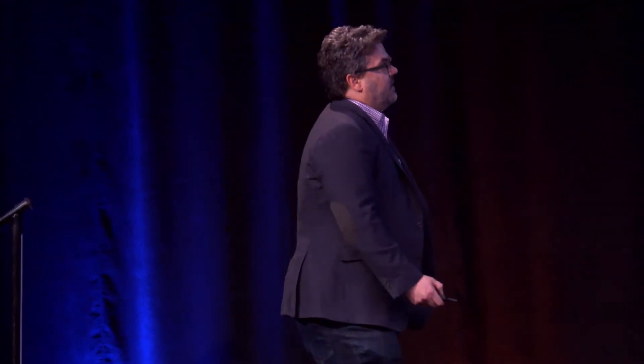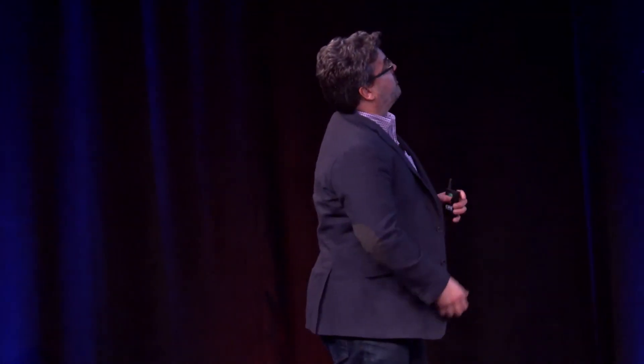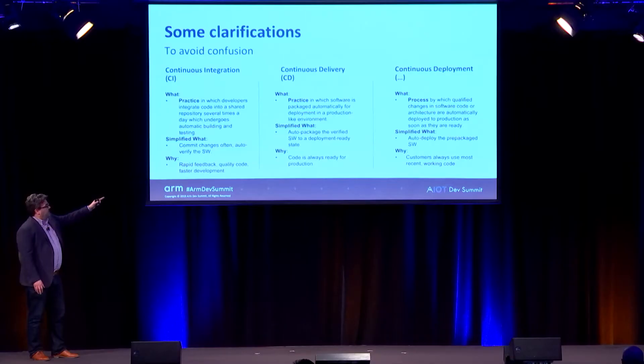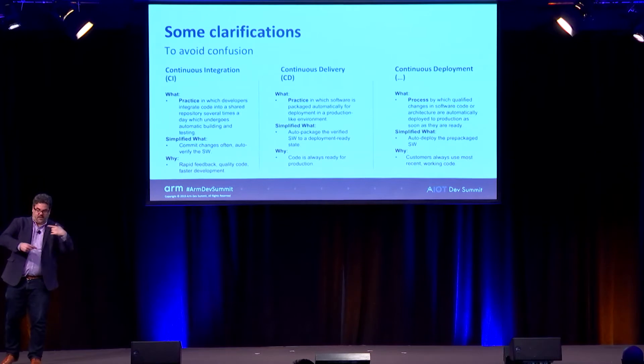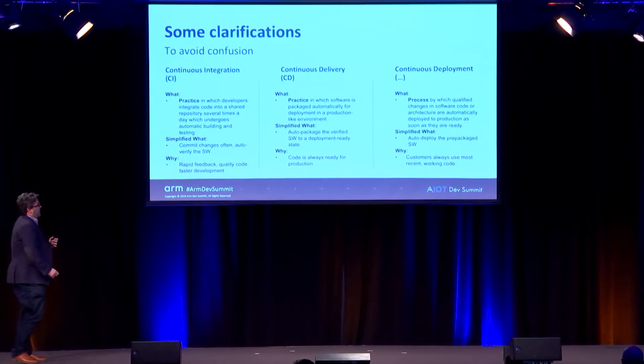There are a few overlapping concepts that people sometimes confuse. Continuous integration is when you have several developers integrating code into a shared repository — the software is changing often and you auto-verify it. This is how you get that rapid feedback cycle: constantly checking things and making sure everything is working.